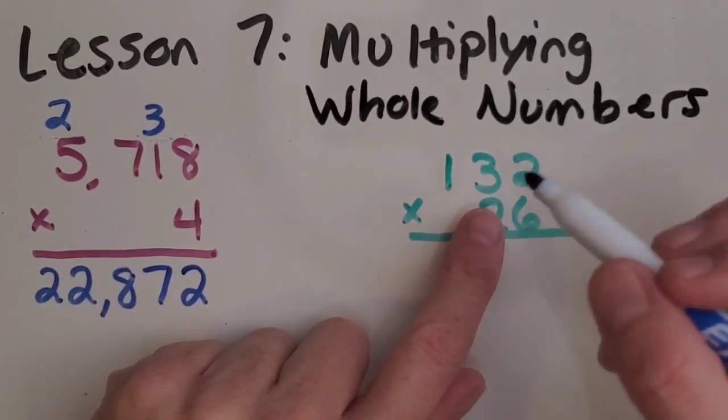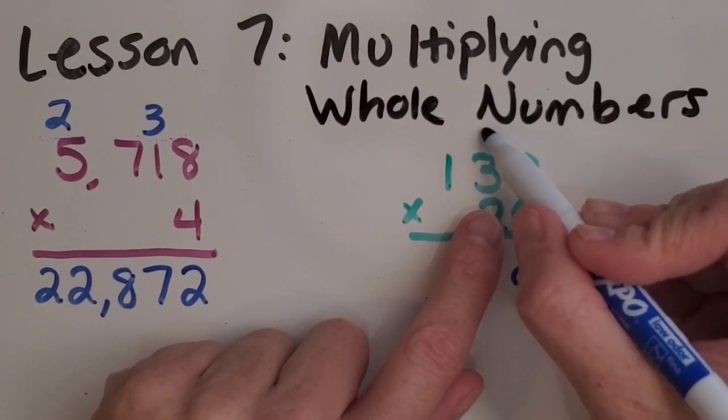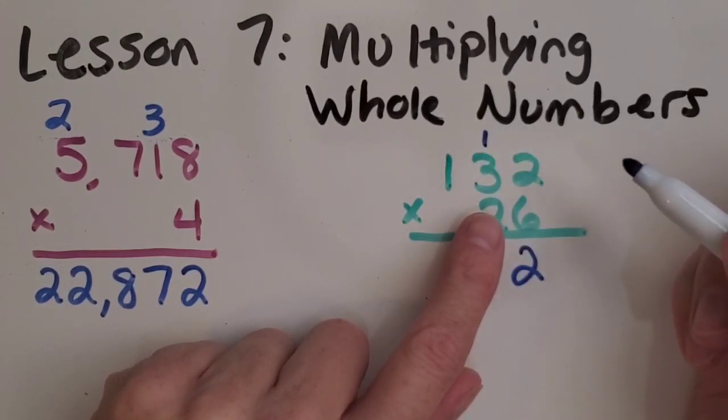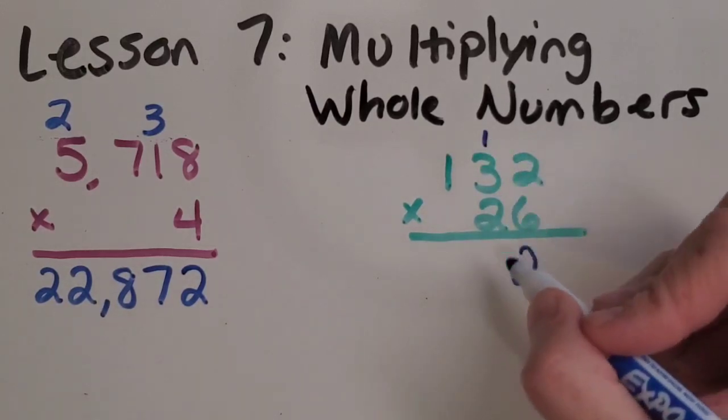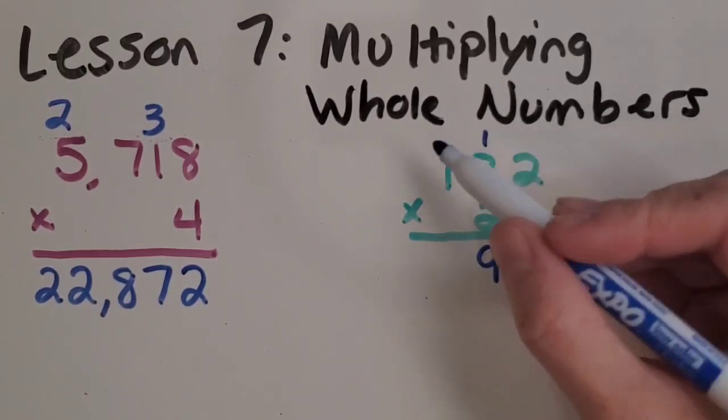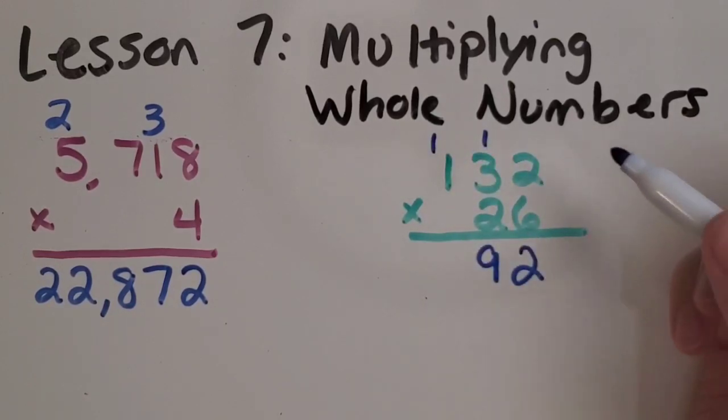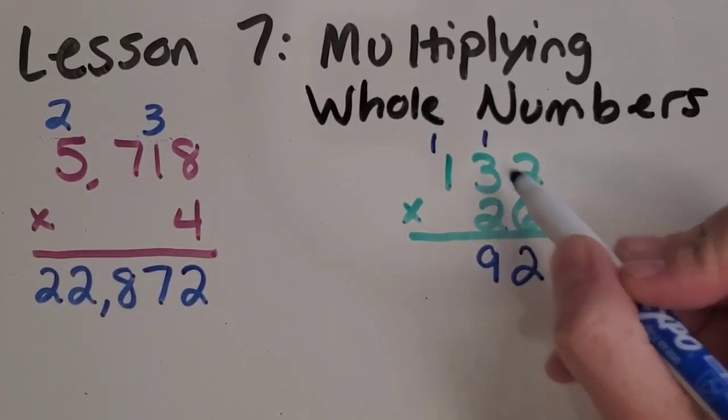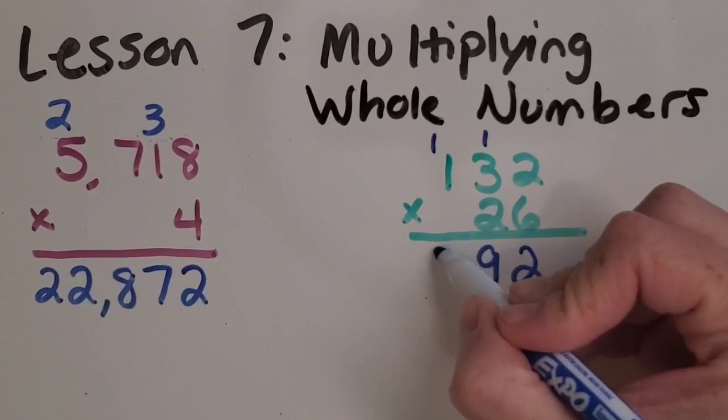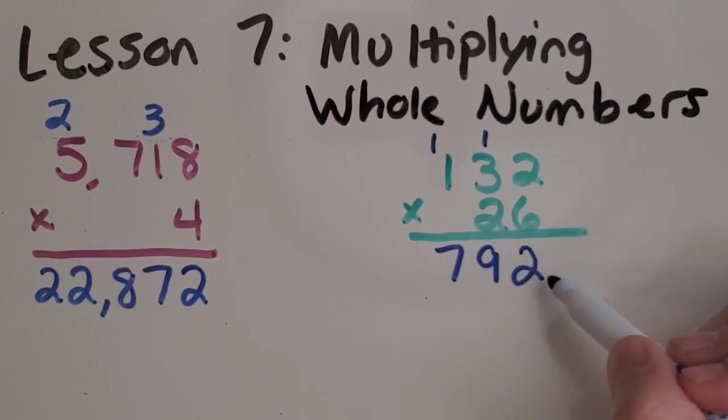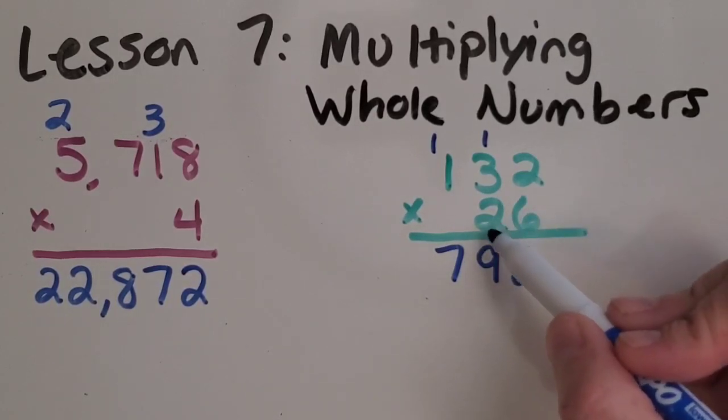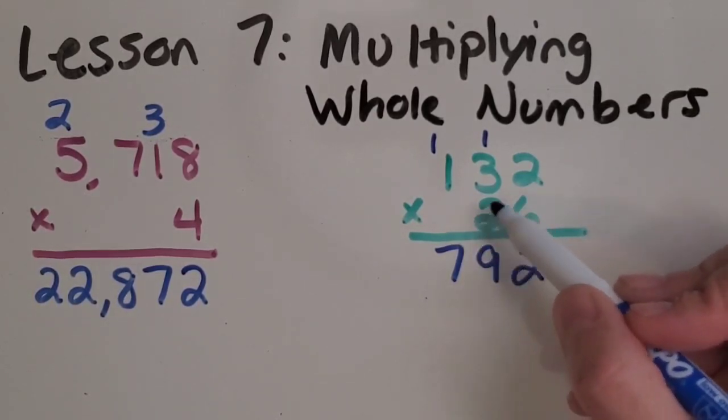So two times six is 12. We're going to do this the same way we did the other problem, still regrouping. Three times six is 18, plus the one is 19. Still going to regroup the same way. One times six is six, plus the one is seven. And I like to call this a partial product because it's part of the answer, part of the product. We're not quite done yet because we haven't done anything with the 20 in 26.